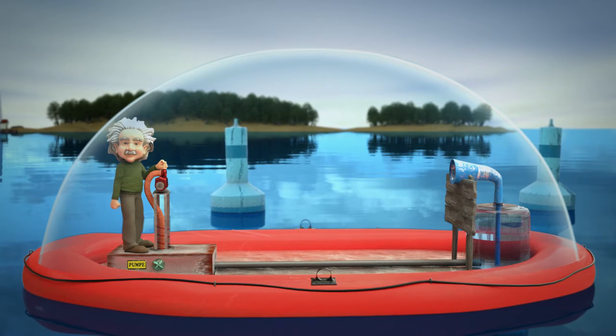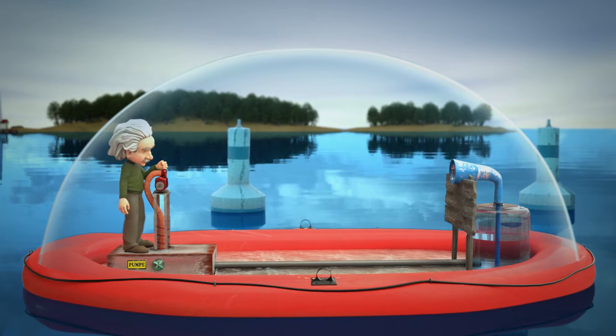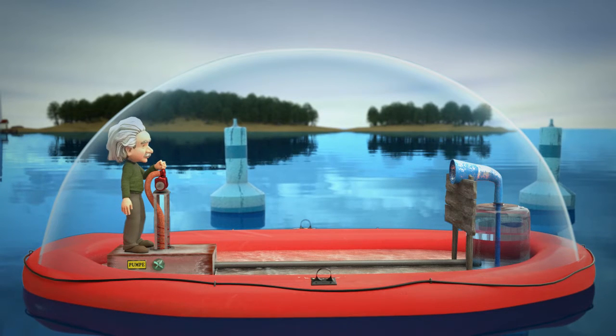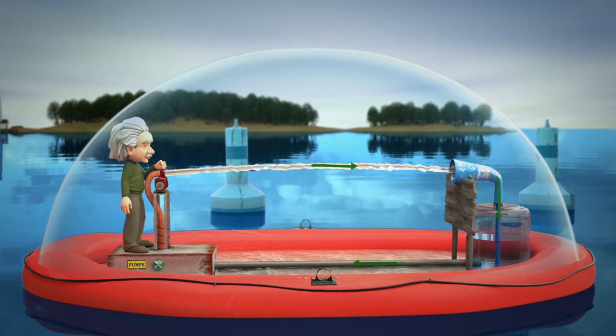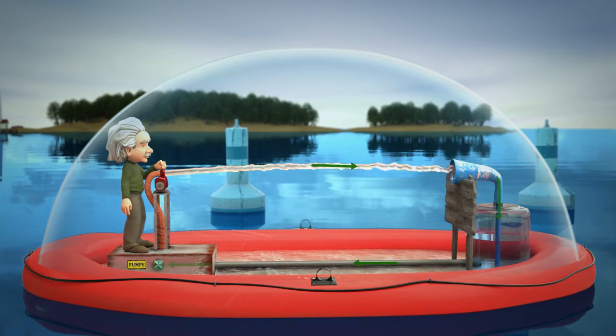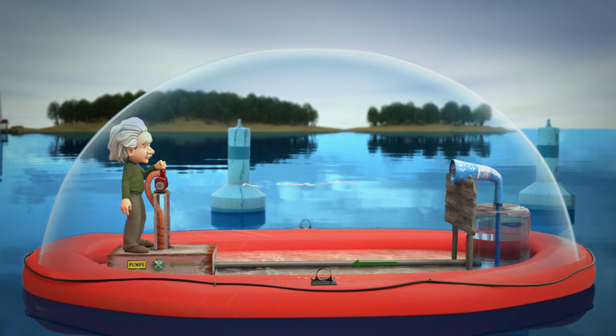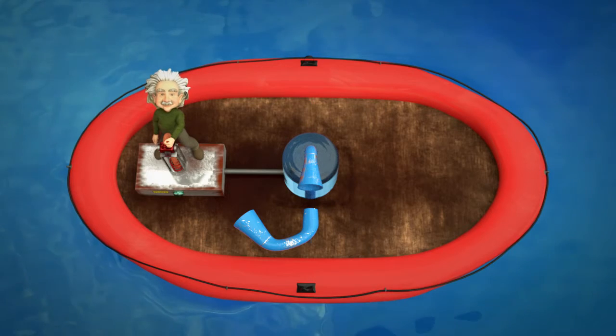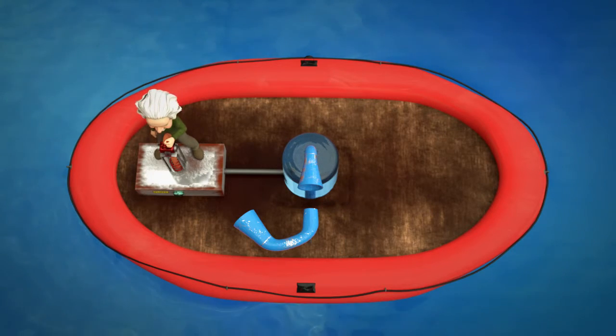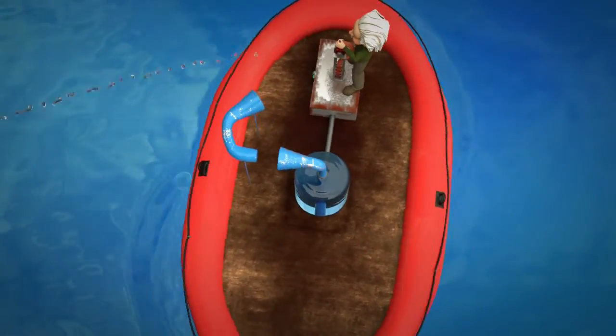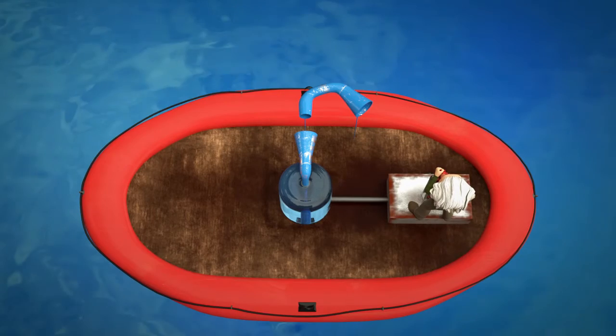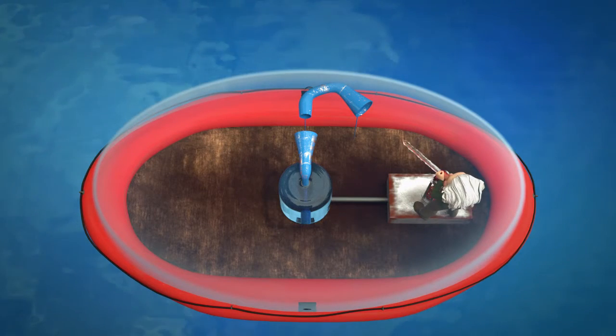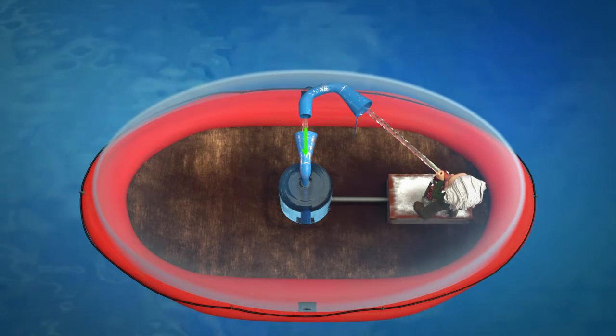When the jet of water is directed into a funnel, a closed cycle builds up. In that way, the boat with the dome is a closed system just like our planet. As soon as the jet of water is directed to the side, the boat will rotate. However, when the jet of water is directed into a system of funnels which form a loop and consequently a closed cycle, the boat will not move.